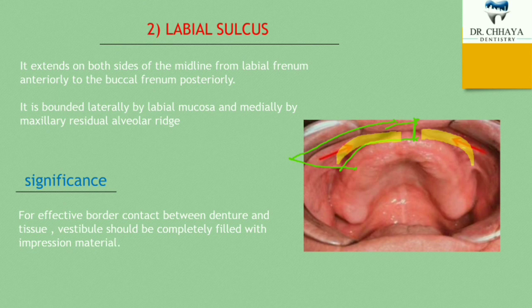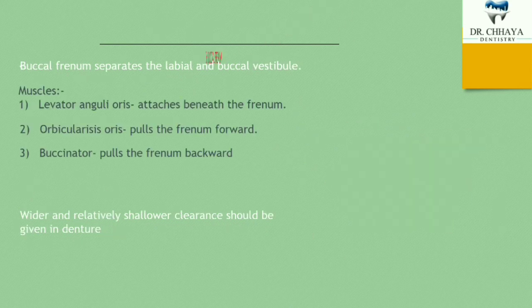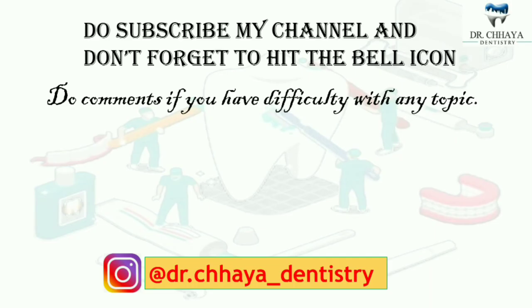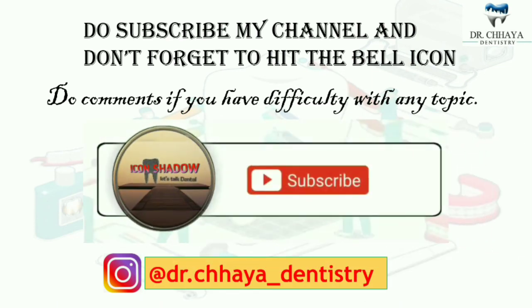The third structure is the buccal phrenum, which separates the labial and buccal vestibule. We will learn about this and the remaining structures in detail in part two. If you found this video helpful, please like it and subscribe to the YouTube channel.